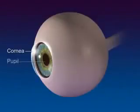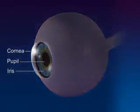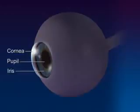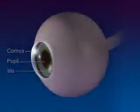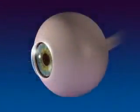The pupil is the circular opening in the front of the choroid. The iris is the colored smooth muscle surrounding the pupil, which adjusts the size of the opening according to the brightness of light.